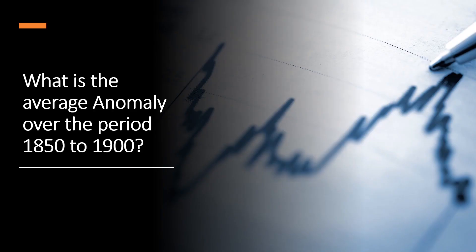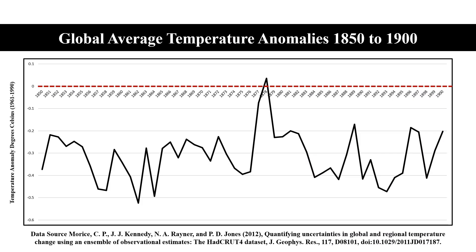So what is the average anomaly for the period 1850 to 1900? The average global temperature anomaly is equal to minus 0.311 degrees Celsius.